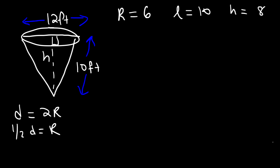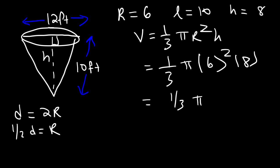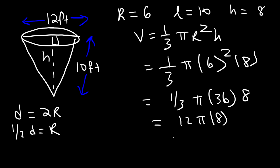Let's calculate the volume: one-third π r² h, with r = 6 and h = 8. 6 squared is 36, and one-third of 36 is 12. 12 times 8 is 96. So the volume is 96π cubic feet.